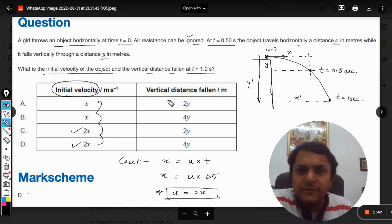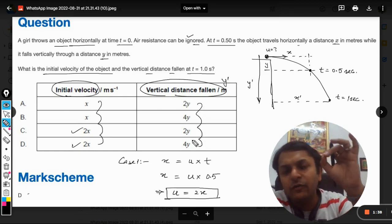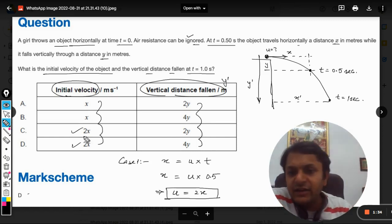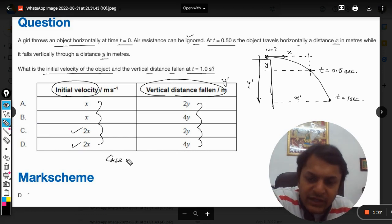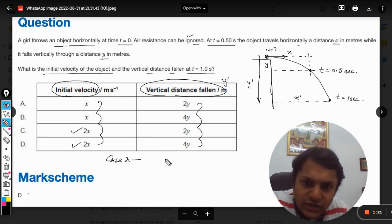Now let us think about the vertical distance fallen. We need to find y dash in terms of y, so we need to compare the two cases. This will be case number two. What we are going to do is compare both of them. So s equals ut plus half a t squared for the vertical motion.